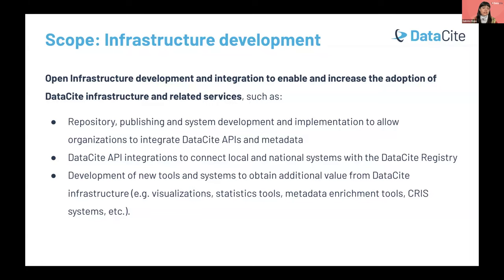This year we have projects developing data repositories, national repositories, and repositories for museum collections — these are just some examples. To apply, we recommend you start by checking our guidelines on our website. We also have a frequently asked questions page. You need to complete an application form on our website with all required fields, including attaching files like a project timeline, budget, and a sustainability file. We will only accept applications that come through the form — please do not send applications by email.